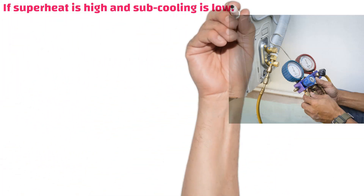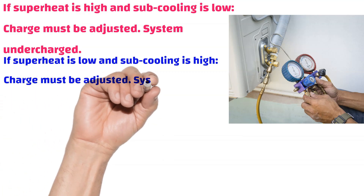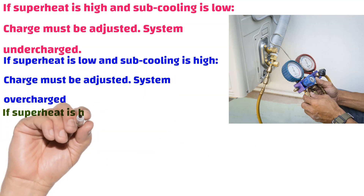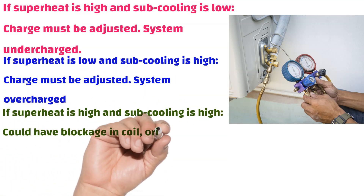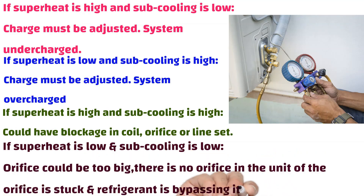If superheat is high and sub-cooling is low, charge must be adjusted — the system is undercharged. If superheat is low and sub-cooling is high, charge must be adjusted — the system is overcharged. If superheat is high and sub-cooling is high, there could be a blockage in the coil, orifice, or line set. If superheat is low and sub-cooling is low, the orifice could be too big, there is no orifice, or refrigerant is bypassing it.